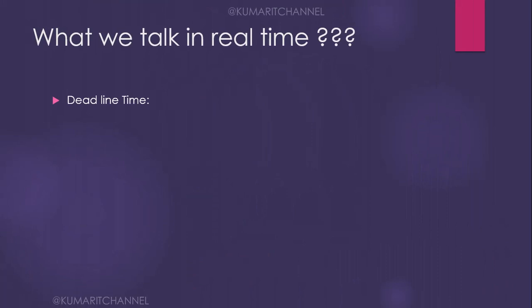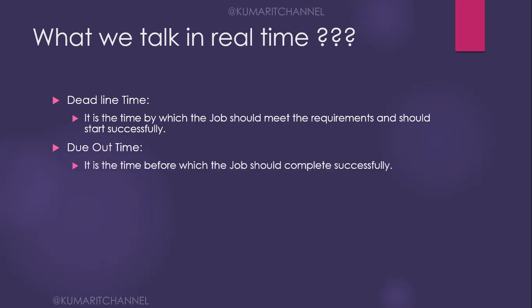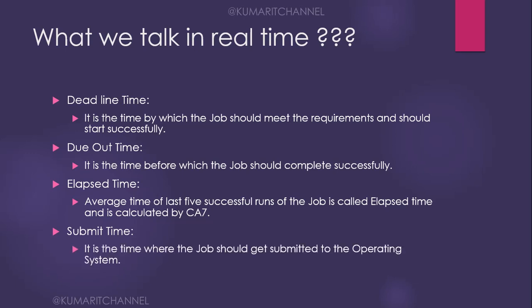There are a few more important terms. Deadline time is the time by which the job should meet requirements and start successfully. Out time is the time before which the job should complete successfully. Elapsed time is the average time of the last five successful runs of a job, calculated automatically by CA7. Submit time is the time when you submit the job to the operating system.